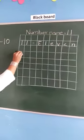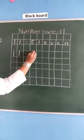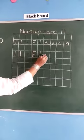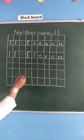Again read this line, write down 11 now, E, L, E, V, E, and N, 11.